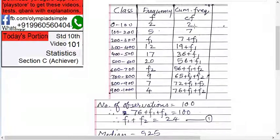So 2 is 2 over here. Here it will be 5 plus 2 equals 7. Here f1 plus 7. Here 12 plus 7 plus f1, so 19 plus f1. Here 17 plus 19 equals 36 plus f1. Here 20 plus 36, so 56 plus f1.